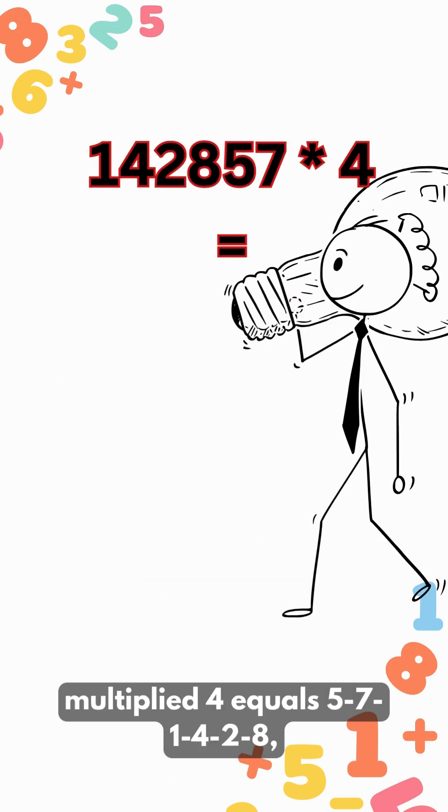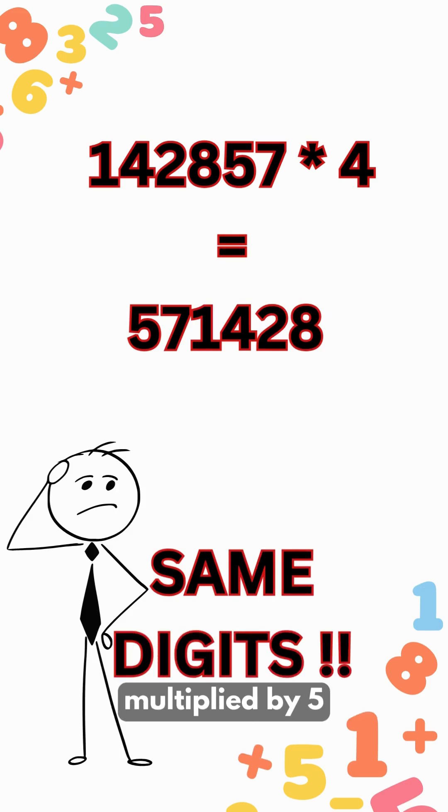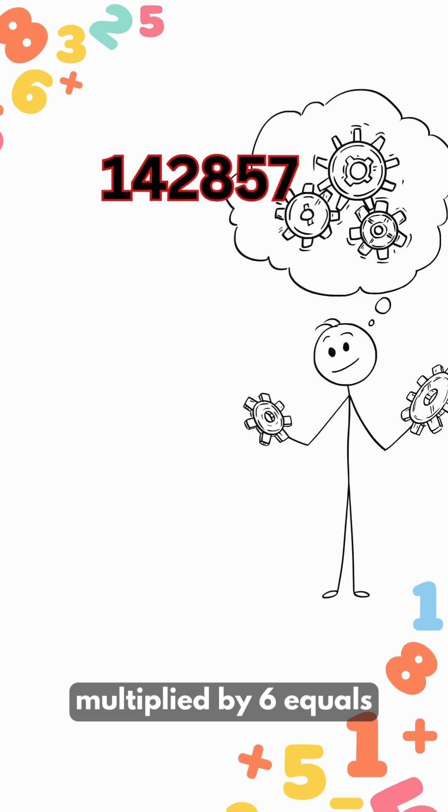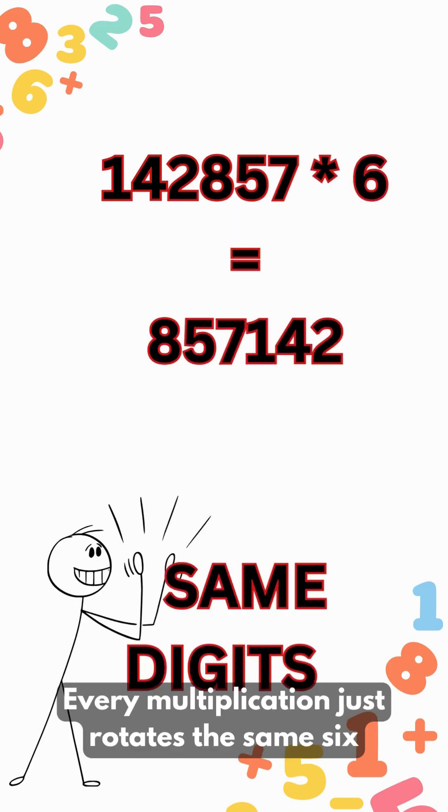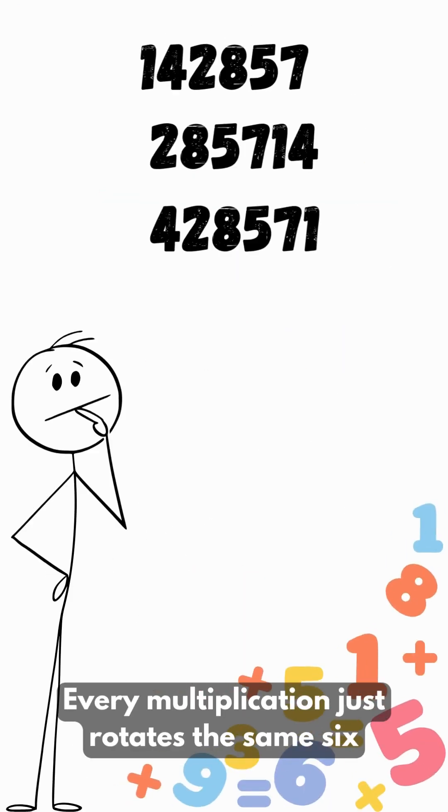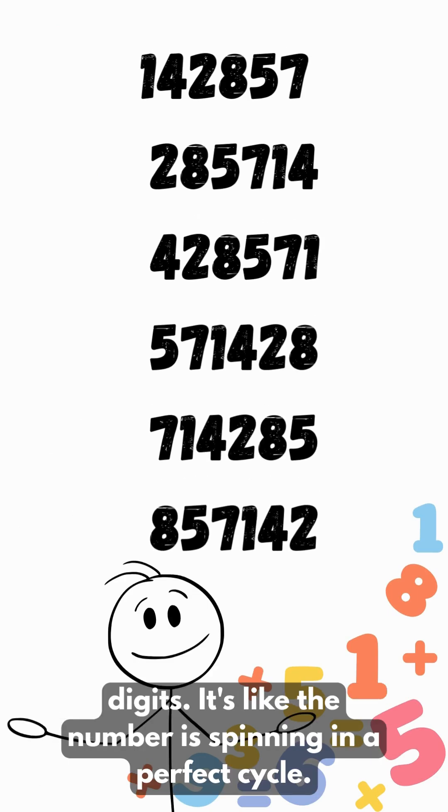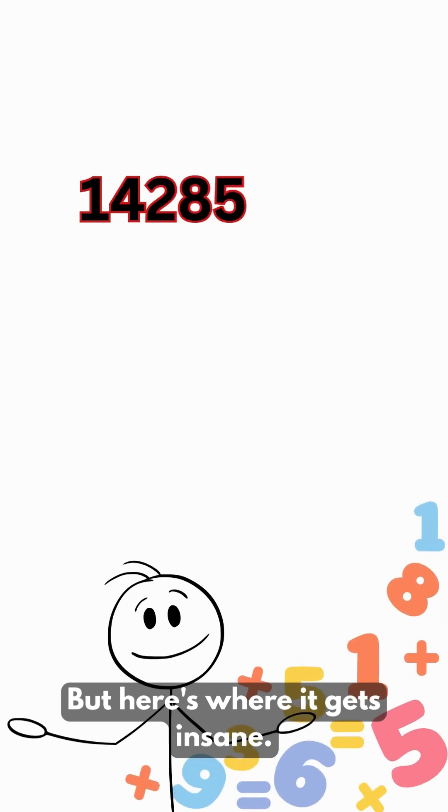Multiplied by 4 equals 571428, multiplied by 5 equals 714285, multiplied by 6 equals 857142. Every multiplication just rotates the same six digits. It's like the number is spinning in a perfect cycle. But here's where it gets insane.